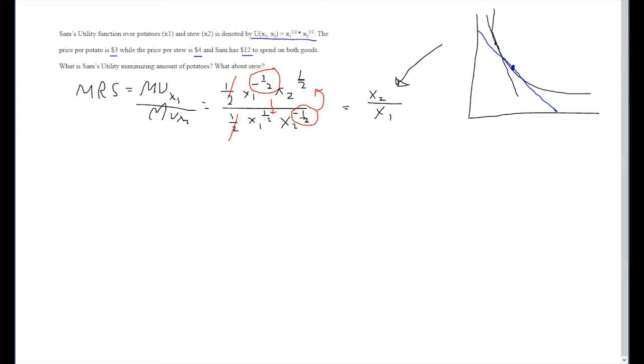The slope of our budget line is going to be p1 over p2, or our price ratio. At this blue point that we've highlighted here, where we're tangent to our utility curve, this price ratio,